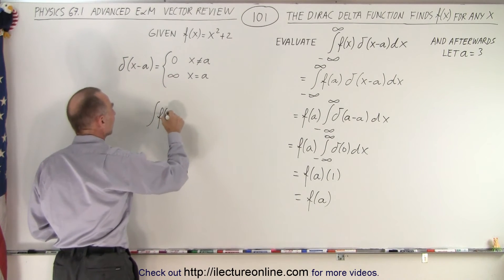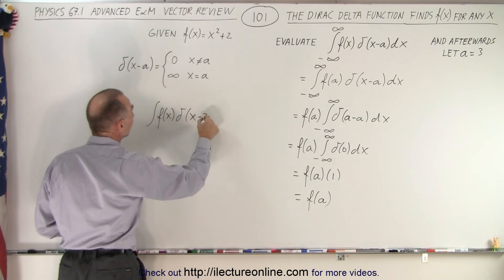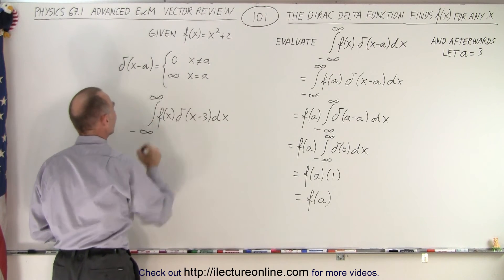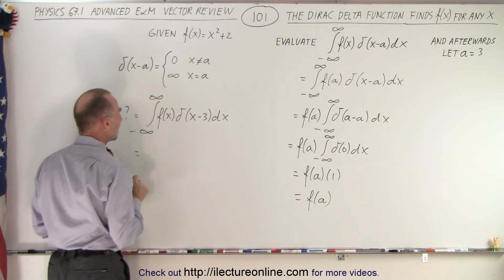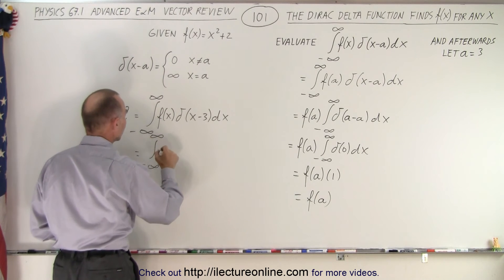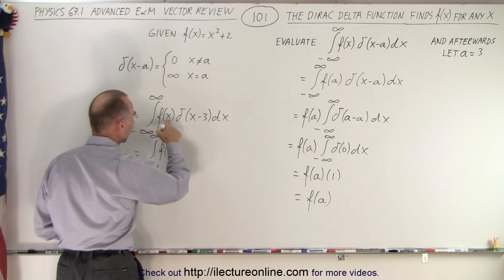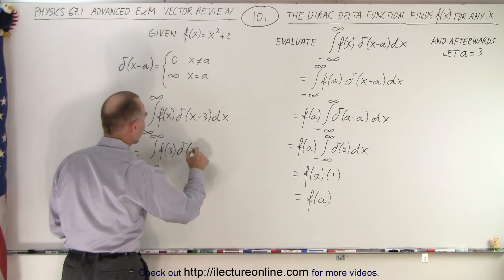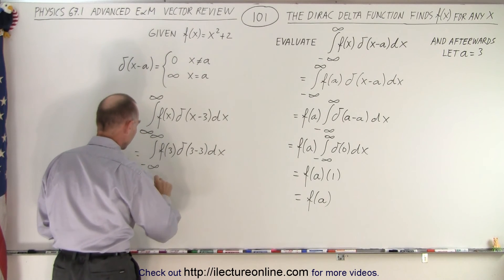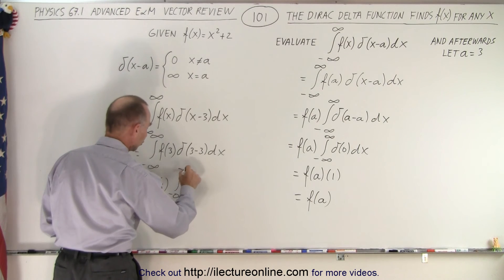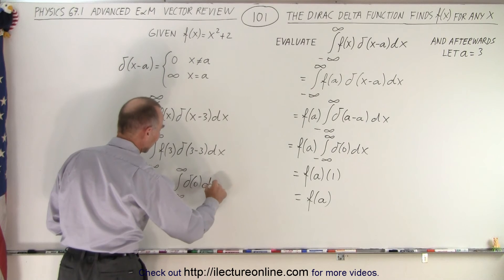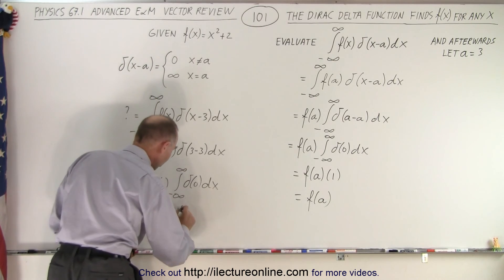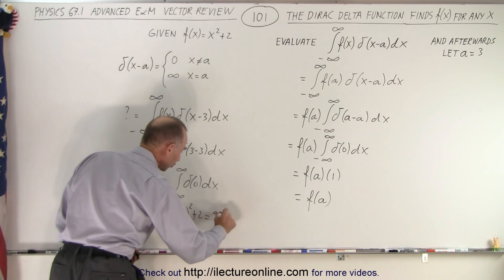We want to evaluate the integral from minus infinity to positive infinity of f(x) times delta of x minus 3 dx. By our result, this equals the function evaluated at x equals 3 times the integral of delta of 3 minus 3 dx, which equals f(3) times 1. Since f(x) equals x squared plus 2, we get 3 squared plus 2, which is 9 plus 2, equaling 11.